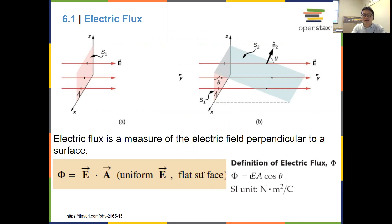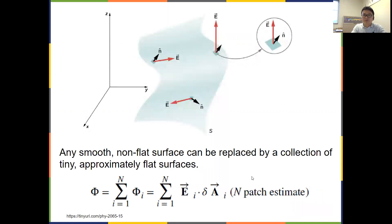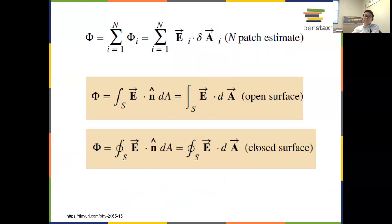The magnitude will be EA cosine theta. It's a scalar quantity, so it will not have a direction. For an uneven or curved surface, you divide it into small patches and sum over the flux from each small patch to calculate the total flux. When patches become infinitesimally small, you perform integration over the whole surface of E dot dA. For a closed surface, the integration sign has a circle in the middle, indicating integration through a closed surface.